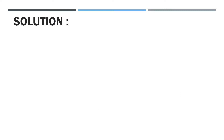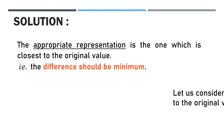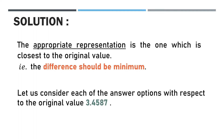Solution. Let us see what is meant by the appropriate representation of a value. The appropriate representation is the one which is closest to the original value — that is, the difference should be minimum. Now let us consider each of the answer options with respect to the original value, that is 3.4587.